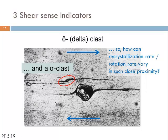If recrystallization rate and rotation rate are both important factors, understanding why a sigma clast and a fast-rotating delta clast can develop only microns apart in the same shear zone requires a look into continuum mechanics — specifically into the velocity field and fabric attractor concept in a simple shear zone.